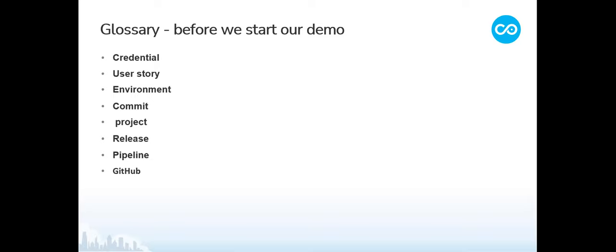A Release lets you group user stories to promote them together and keep track of the version of changes your application experiences after every deployment. A Pipeline is a list of connections defining a path through which components move through the release management process; user stories and projects are linked to a pipeline. GitHub is a host for Git repositories with collaboration features that let you apply and test changes to your code — in Git terms, GitHub serves as a remote, giving developers an accessible source of truth for their shared work.